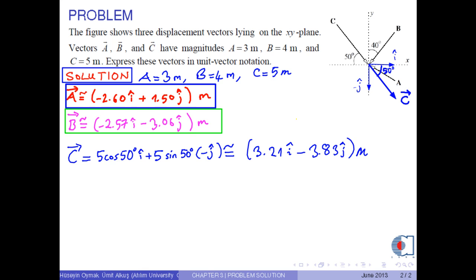Therefore, the result is approximately 3.21 i hat minus 3.83 j hat meters.